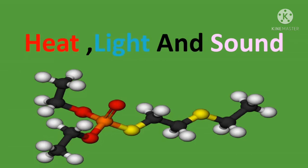Heat, light, and sound are all forms of energy. Heat can be transferred by radiation, conduction, and convection. Visible light can be produced, reflected, refracted, and separated into light of various colors. Sound is created by vibration and cannot travel through a vacuum. Pitch is determined by the vibration rate of the sound source.